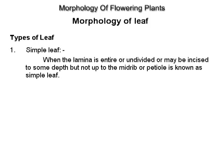Types of leaves. Simple leaf: when the lamina is entire or undivided, or may be incised to some depth but not up to the midrib or the petiole, it is known as a simple leaf. Examples: mango and cotton.